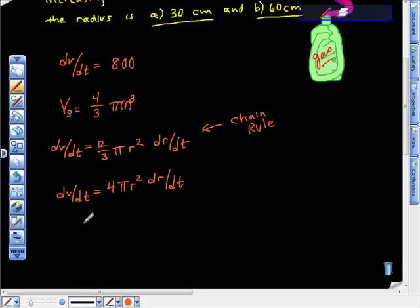What I'm going to do now is set this thing equal to 800, because dV/dt is 800. I believe that this is 800.